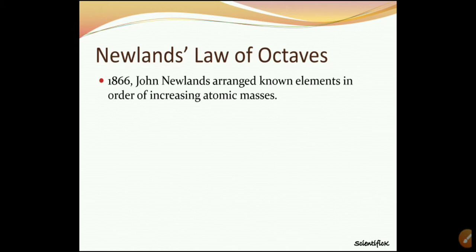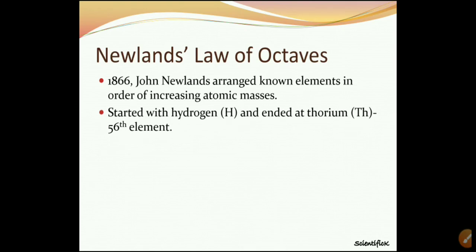Doberrainer also did this - he arranged elements in increasing atomic mass and found triads where the first and third element's average equals the middle element's mass. But Newland did something different. He arranged all known elements in increasing order of atomic mass. He started with hydrogen (H) and ended at thorium - the 56th element. This means in Newland's time, 56 elements were known; the rest were yet to be discovered. And in part one we saw that at present we know 118 elements.